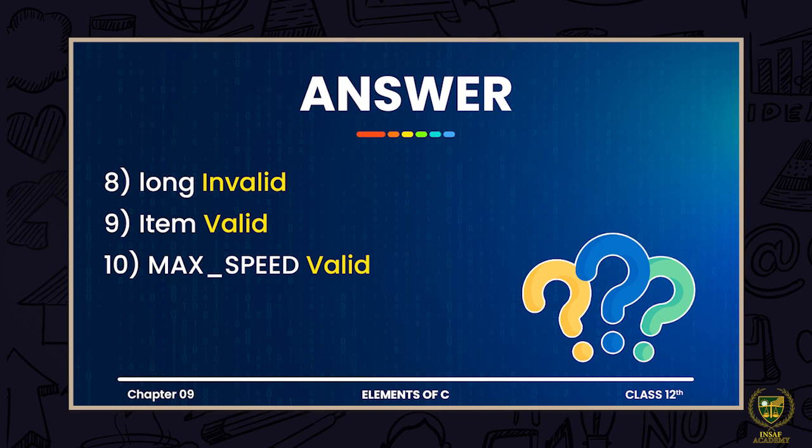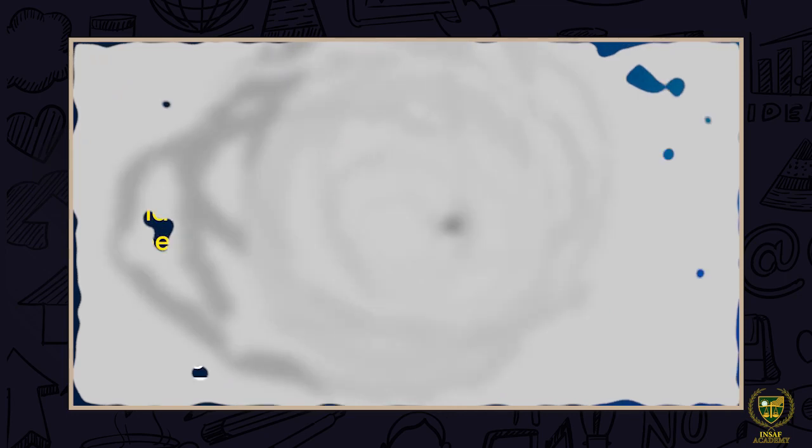I hope that all the variables we discussed are now clear to you. For those who still have some confusion, you have to go through the lecture on variable names where we discussed the rules of naming a variable — go through it once so that any confusion is cleared out.